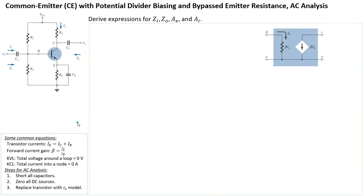Today we're going to analyze a common emitter amplifier with potential divider biasing — that's R1 and R2 — and a bypass emitter resistor. We're going to use the re model to represent the transistor and figure out what Zi, Zo, Av, and Ai are using basic circuit theory and algebra.